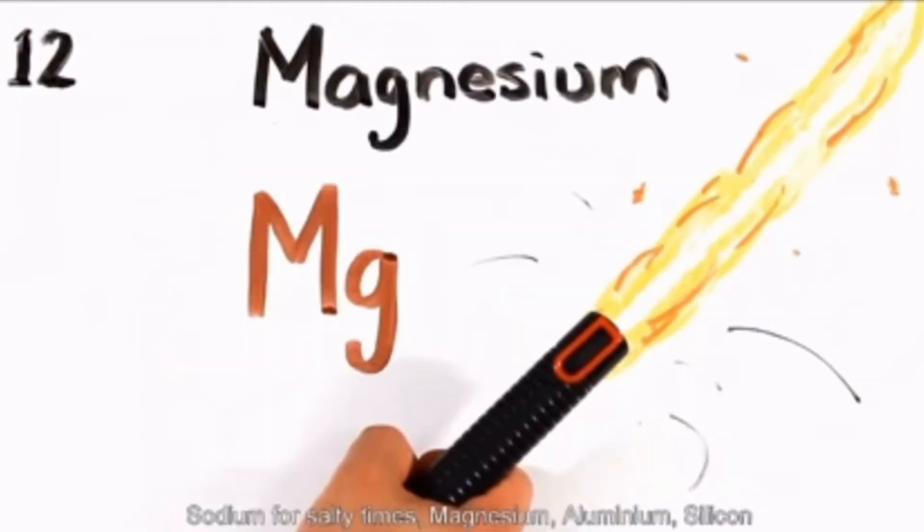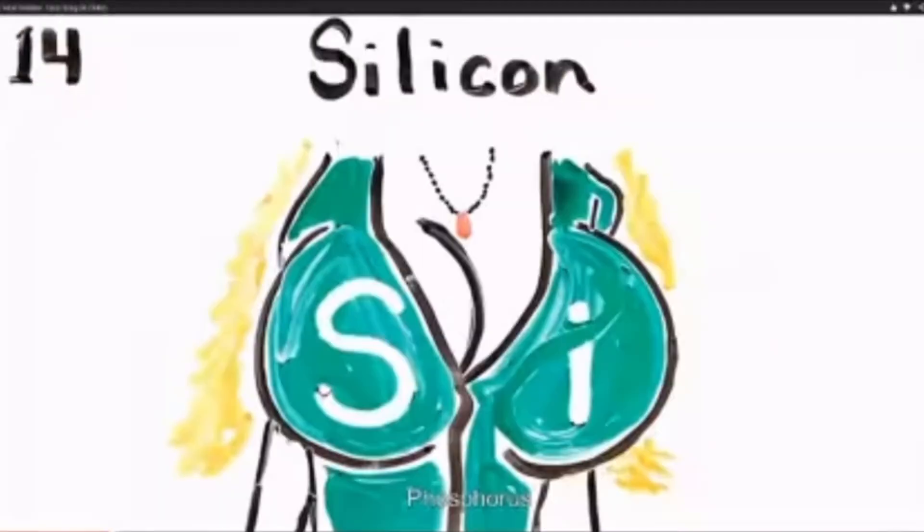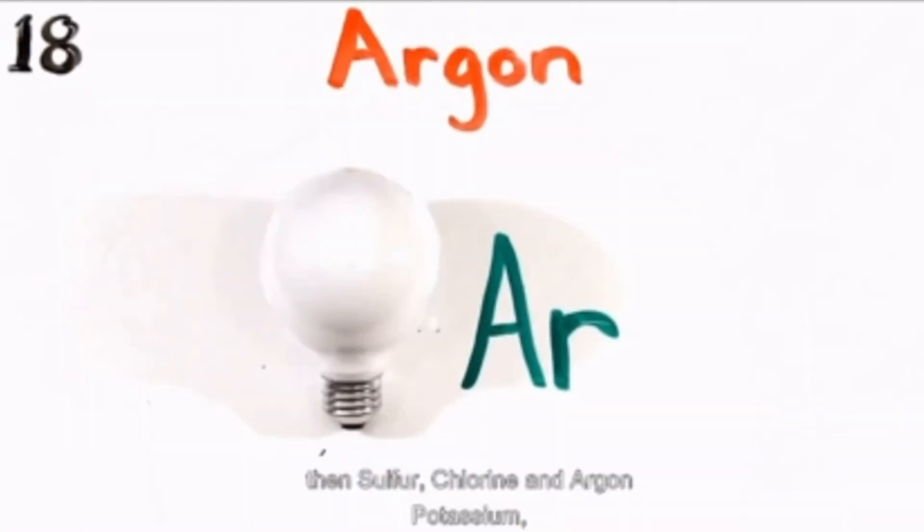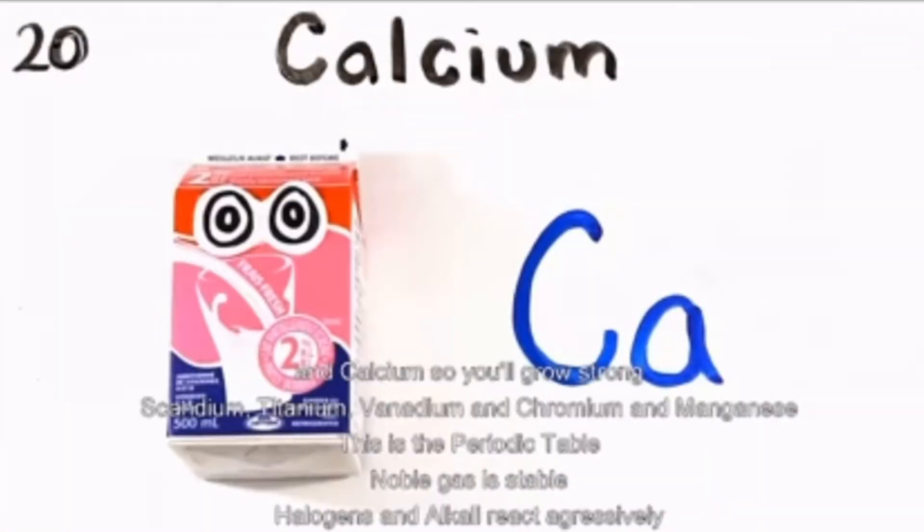Sodium for salty times, magnesium, aluminum, silicon, phosphorus, then sulfur, chlorine, and argon, potassium, and calcium so you'll grow strong.